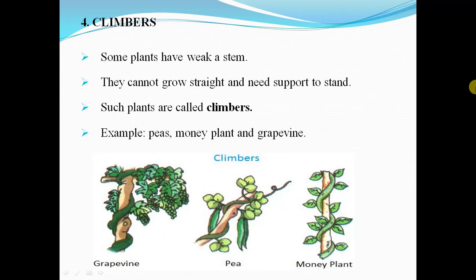Climbers. Some plants have a weak stem, so they cannot grow straight and need support to stand. Such plants are called climbers. Usually they climb through the wall or through some tree. Examples are grapevine, pea, and money plant. You can see how a particular climber is rotated around the stem.